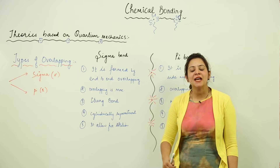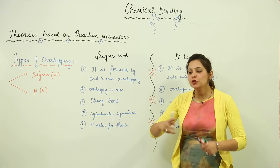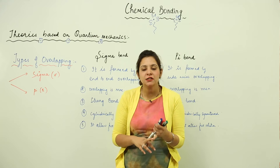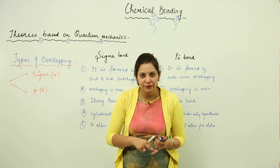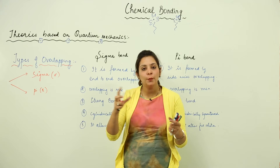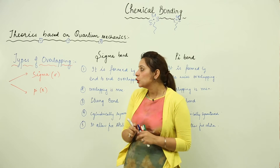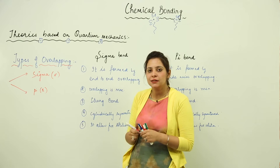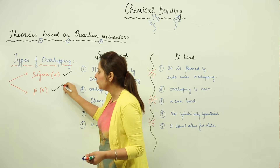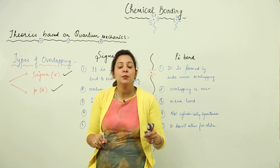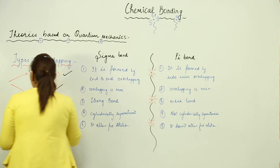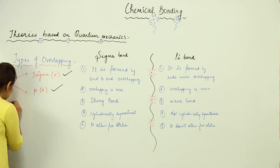In valence bond theory, we need to consider the energy factor and the overlapping factor. There are two kinds of overlapping — orbitals can overlap in two ways — resulting in either a Sigma or a Pi bond, depending on what kind of overlapping is taking place. For example, if we have an s orbital, we know that the s orbital is spherically symmetrical.